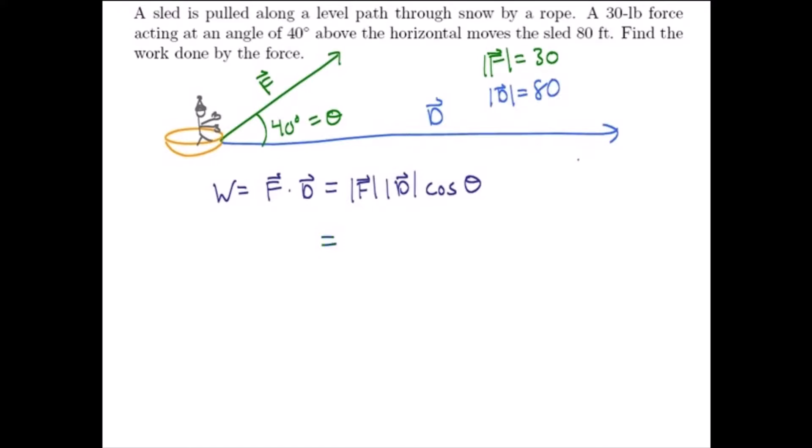And so we have that the work is going to be 30 times 80 times the cosine of 40 degrees. That's going to be 2400 times the cosine of 40 degrees.